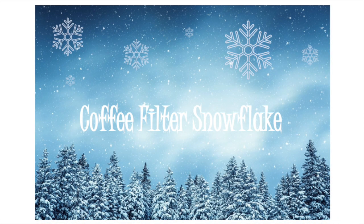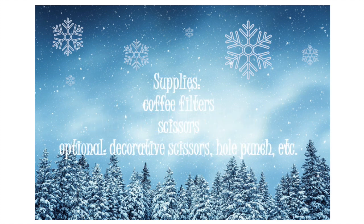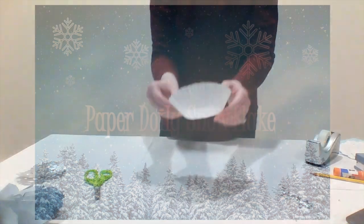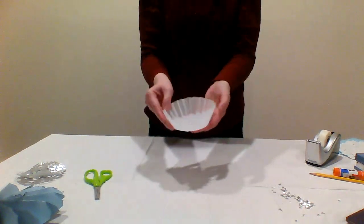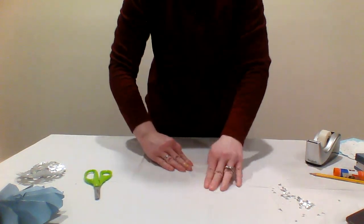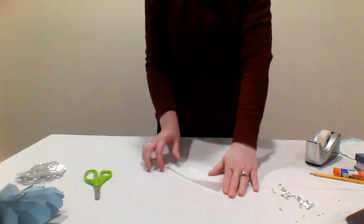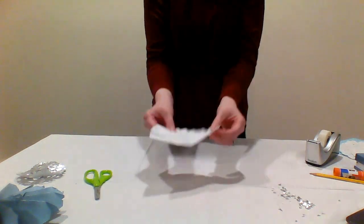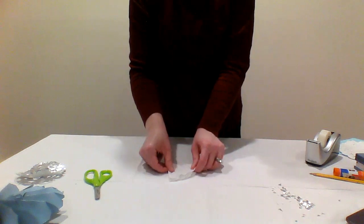The third craft today is a coffee filter snowflake. You'll need a round paper coffee filter and scissors. If you have any decorative edge scissors or a hole punch, those can be used for this craft as well. Gently flatten the round coffee filter into a circle. Now fold the coffee filter in half. Keep folding the coffee filter in half until you have a small triangular shape.